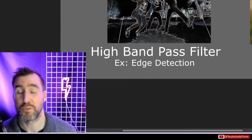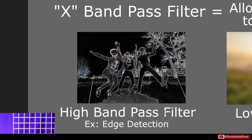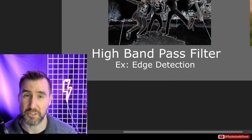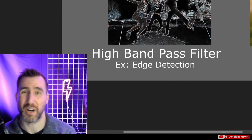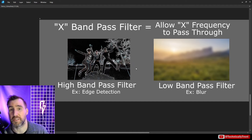Now we have the tools to understand all the terminology. We often see the term bandpass filter — whether high bandpass or low bandpass — and bandpass just means what frequency is allowed to pass through. A high bandpass filter allows high frequencies through, and an example of this is edge detection. A low bandpass filter allows low frequencies through, and this would be a blur filter. Low frequency is the blurry big areas of color, and high frequency is the edges we see with edge detection.